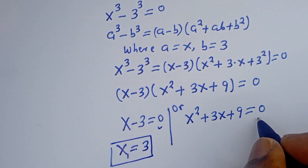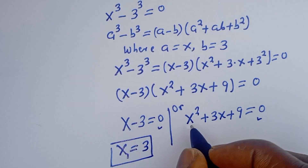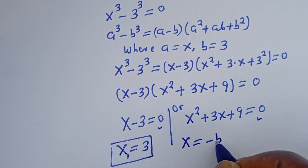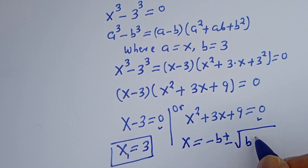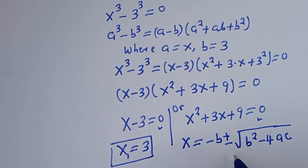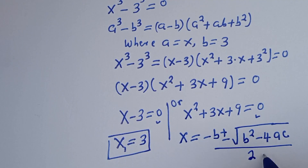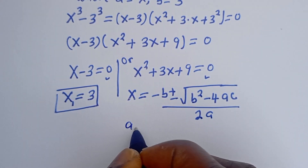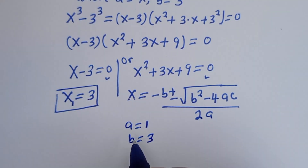Now coming to the second case: this is a quadratic equation which can be solved using the general quadratic formula. The quadratic formula is s equals minus b plus or minus square root of b² minus 4ac, over 2a. Here a equals 1, b equals 3...